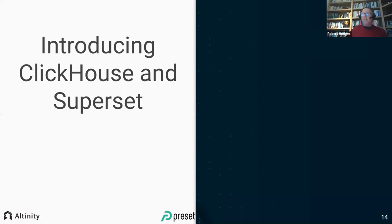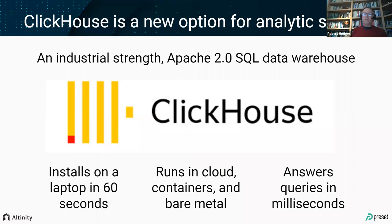We're assuming most people on this call have some acquaintance with Superset, so we've gone over that quickly. We'll now spend most of the rest of the talk discussing ClickHouse and how to integrate it. ClickHouse is a new option for building analytic services — something you can present to your users to get answers from large pools of data. One way to look at it: it's an industrial-strength data warehouse, open sourced under the Apache 2.0 license, just like Superset.